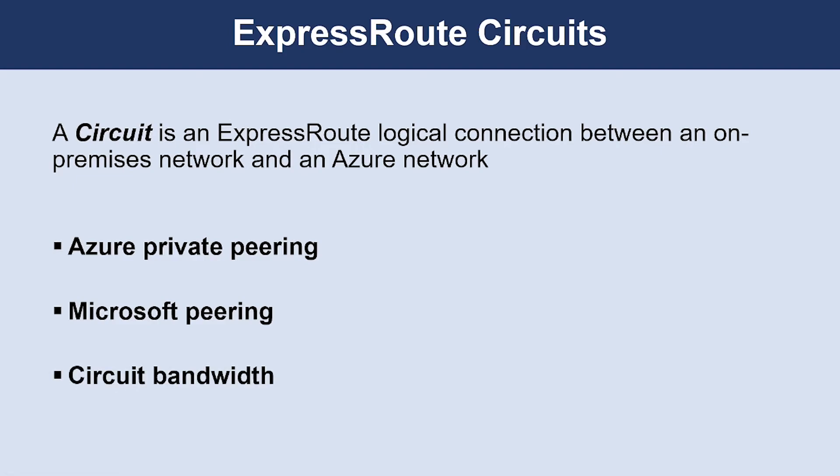The third type is Circuit Bandwidth. You can have as many circuits as you need, each matching the bandwidth you require. For example, you might want a higher bandwidth between your data center and the cloud, but a lower bandwidth for your satellite offices. Bandwidth speeds come in fixed tiers — for example, 50 Mbps, 100 Mbps, 1 Gbps, 10 Gbps, or 100 Gbps. The bandwidth gets shared across any peering in the circuit and is mapped to the connectivity provider and peering location.